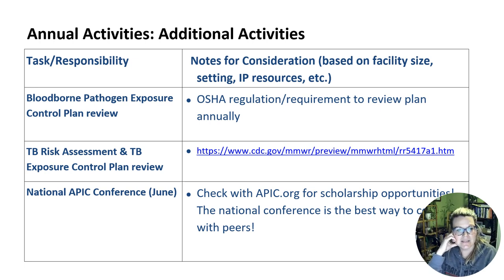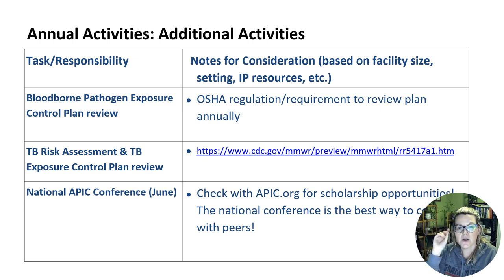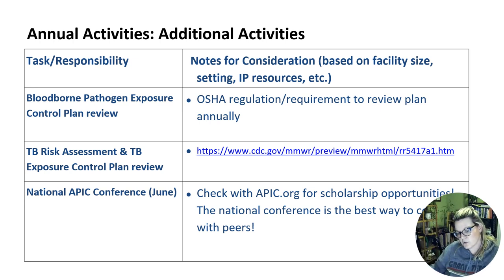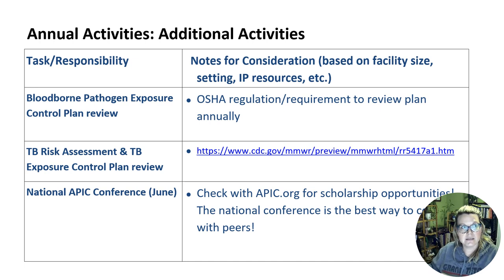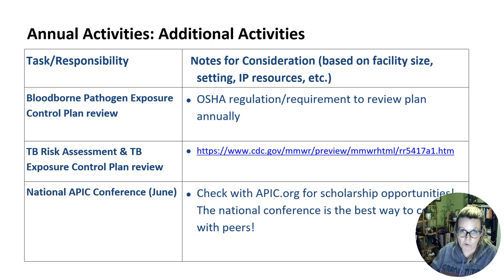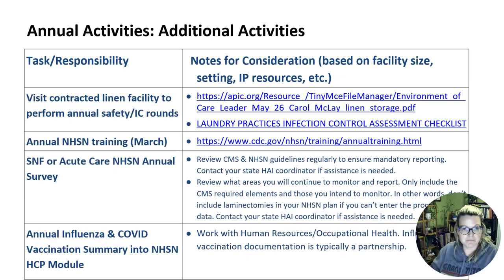Next in our annual activities is the National APIC Conference in June. Check at apic.org for scholarship opportunities — there are tons of scholarship opportunities. Another way to get to the National Conference is to become active in your local chapter, as many local chapters sponsor scholarships to support their members going to the National Conference. Since the pandemic, we also have an option for virtual participation, which is wonderful especially if you're the lone infection preventionist and can't leave your facility for three to four days at a time.